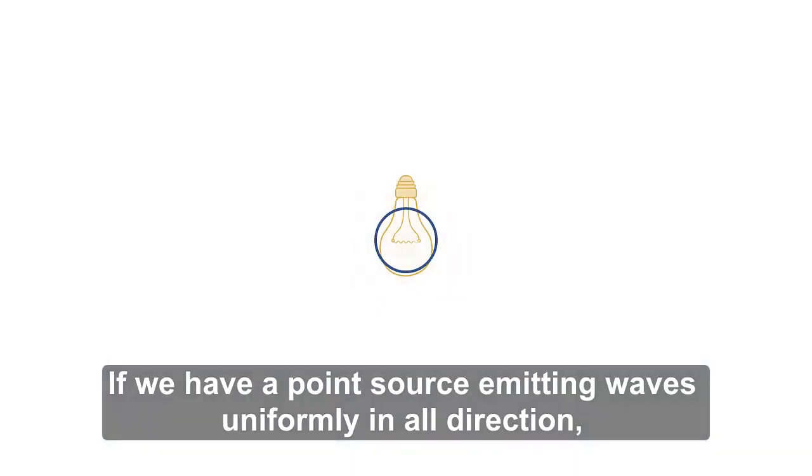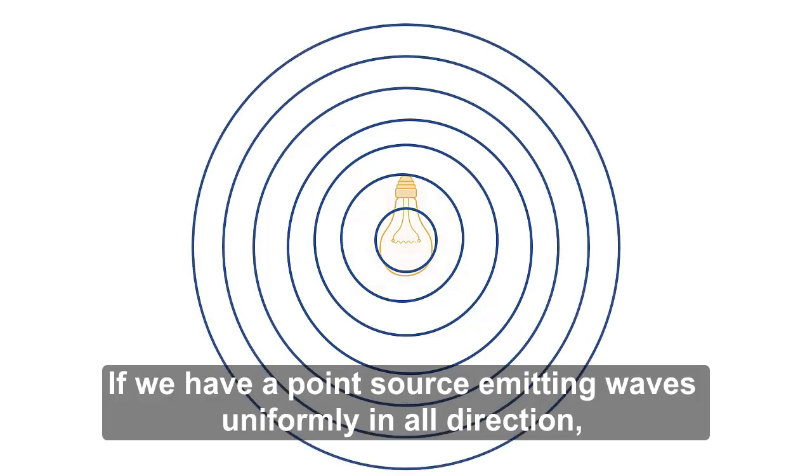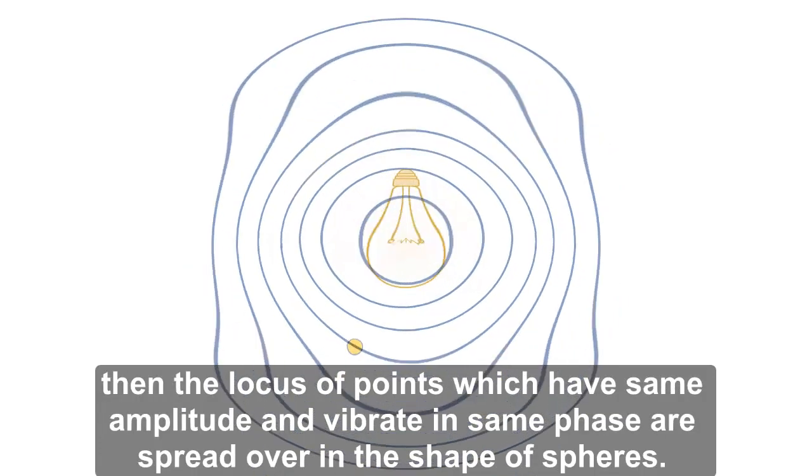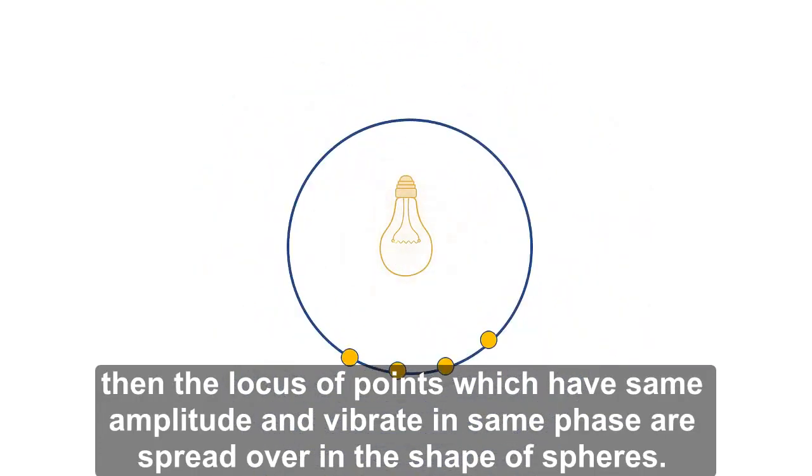If we have a point source emitting waves uniformly in all directions, then the locus of points which have the same amplitude and vibrate in the same phase are spread over in the shape of spheres.